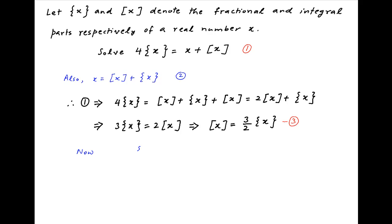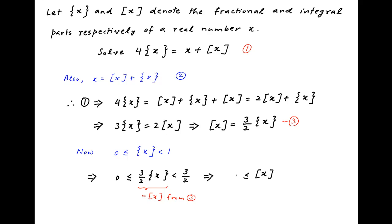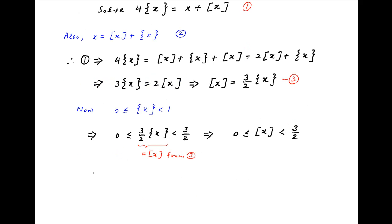Now, the fractional part of a number will always be greater than or equal to 0 and strictly less than 1. Therefore, 3/2 times the fractional part of x is greater than or equal to 0 and less than 3/2. From result 3, we know that 3/2 times the fractional part of x equals the integral part of x, so the integral part of x is greater than or equal to 0 and less than 3/2. Since the integral part of x is an integer, it can take only two values: 0 or 1.